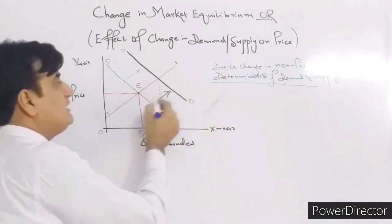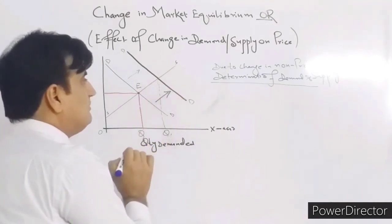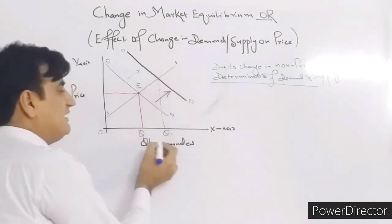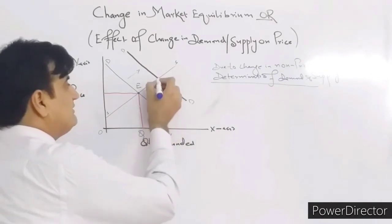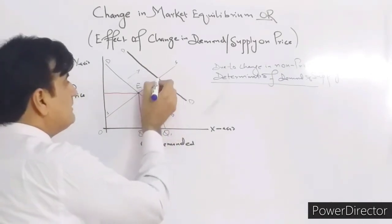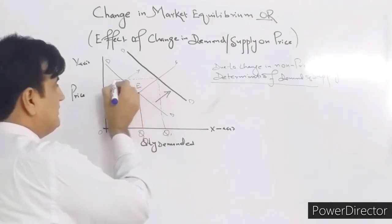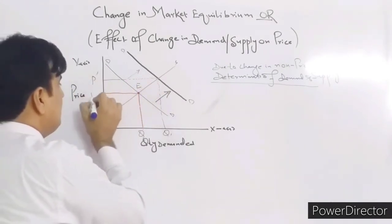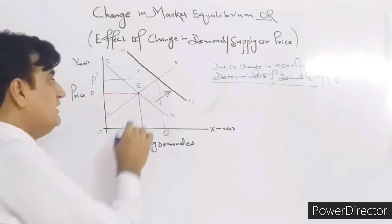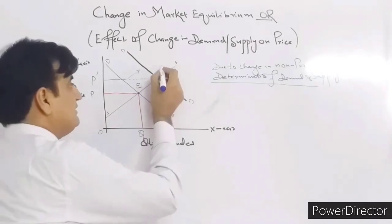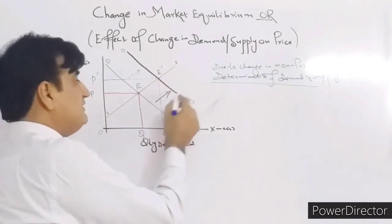When demand increases due to a change in a non-price determinant, the quantity demanded increases and also the price. A new price OP dash is determined — initially it was OP, now it is OP dash — and the new equilibrium point is E dash due to the increase in demand.